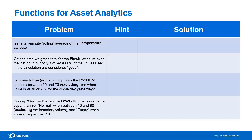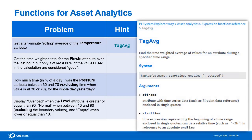For this first one, we can see that we want to get a 10-minute rolling average of the temperature attribute. To get a 10-minute rolling average, our hint is to use the TagAvg function. Let's take a look at the TagAvg function in the Help section of PI System Explorer. In PI System Explorer, you can hit the Help button and navigate down to Asset Analytics, Expression Functions Reference, and then take a look at TagAvg.